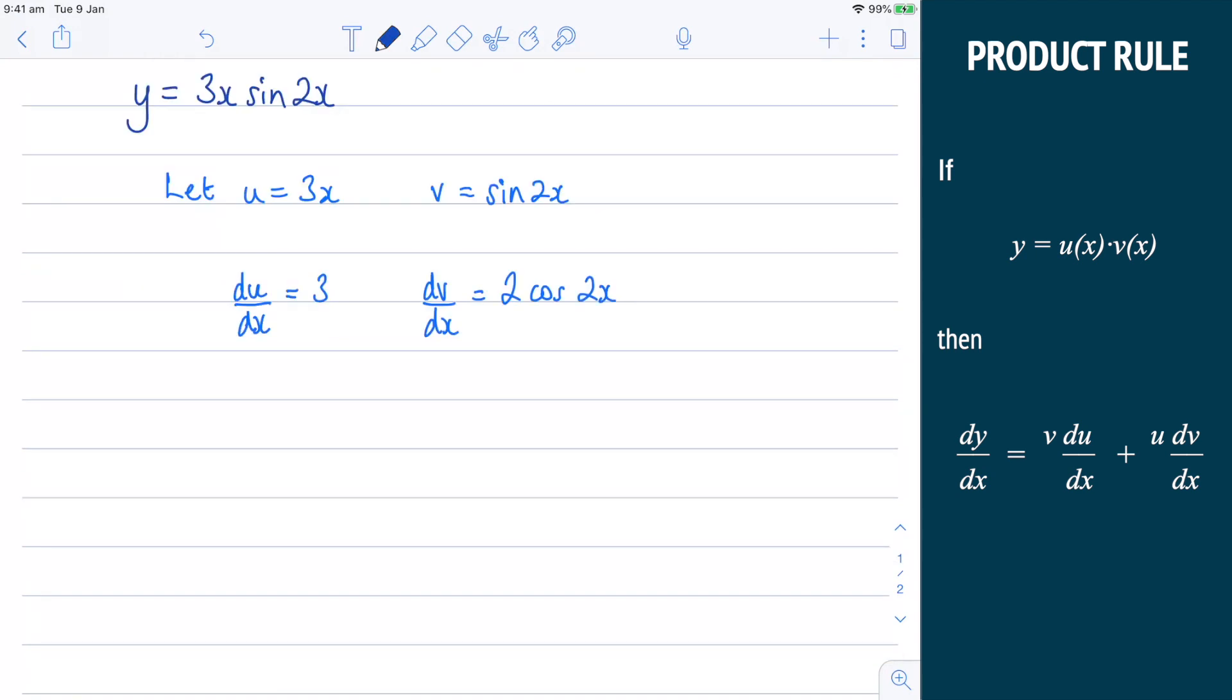Now, plugging that into the product rule itself, what I will have is that dy by dx is equal to v multiplied by du by dx. So that is going to be 3 sine 2x plus u dv by dx.